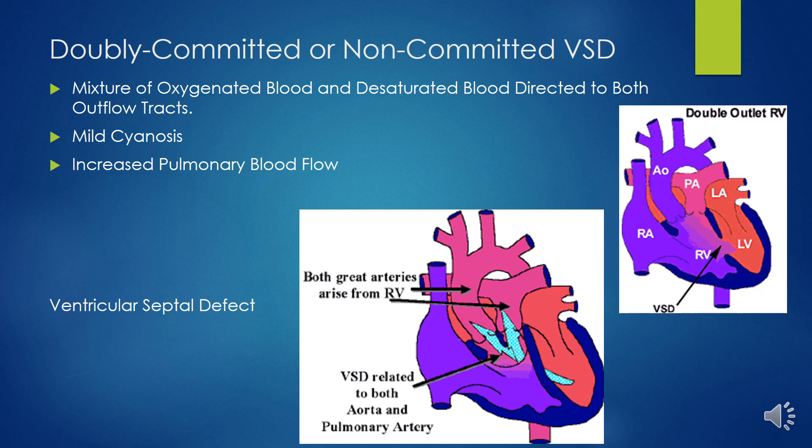For DORV with subpulmonary VSD and pulmonary stenosis, the VSD can be baffled to the aortic annulus, and the pulmonary stenosis is addressed with various RVOT reconstruction strategies. The Rastelli procedure involves a baffle from the VSD to the aorta with an RV-to-PA conduit. The REV procedure involves posterior aortic arch translocation for biventricular outflow tract obstruction.